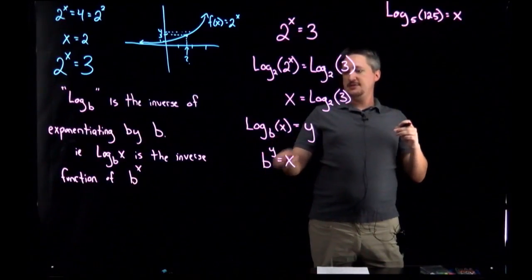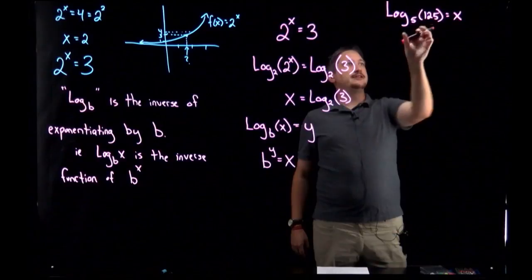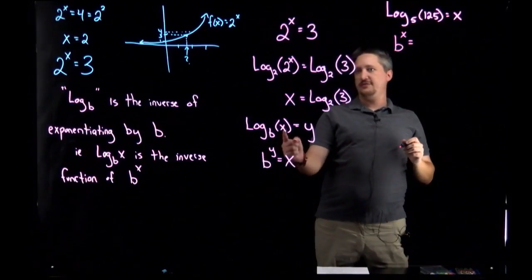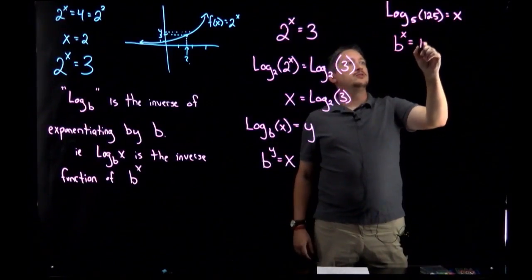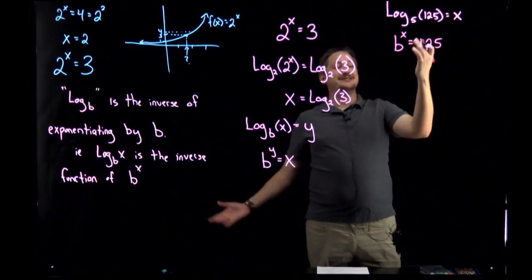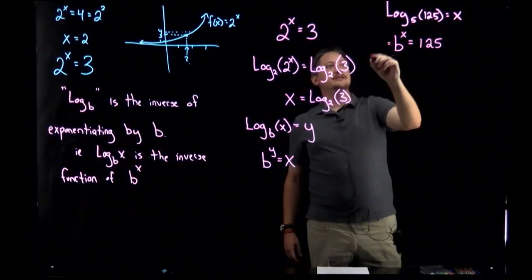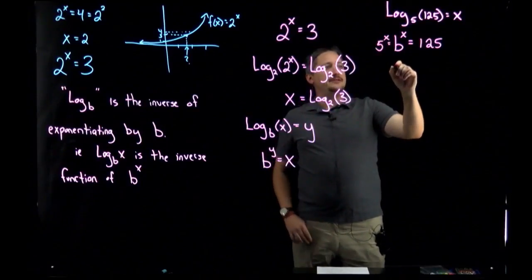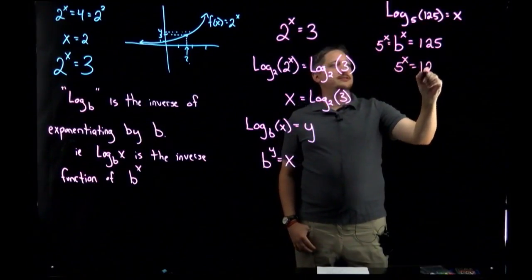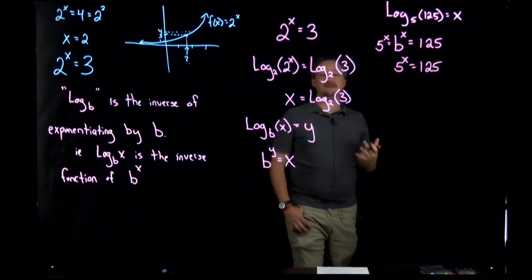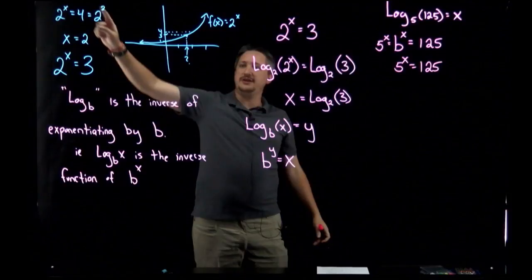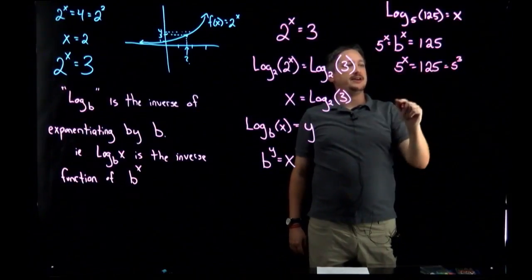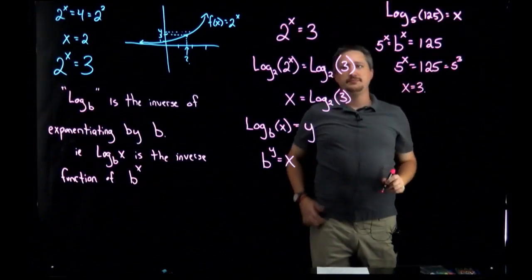Log base 5 of 125 might not be terribly clear what that actually is, but if we put this into exponential form - take the b to the other side - it's b^x equals the argument of the log, so 5^x = 125. And this you might actually be able to solve, just like we had done over here. 125 is really 5 cubed, so same base, we have that x equals 3.